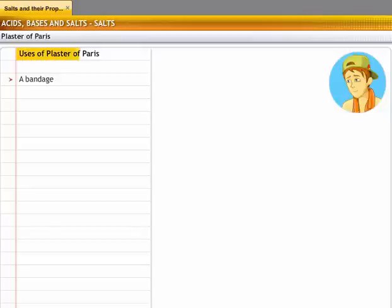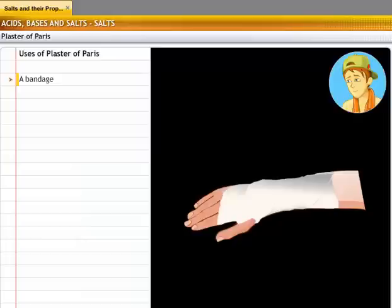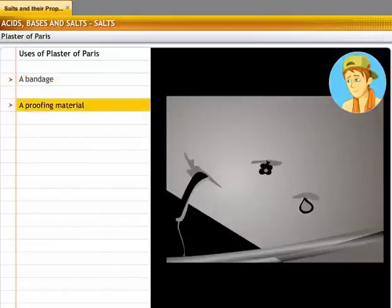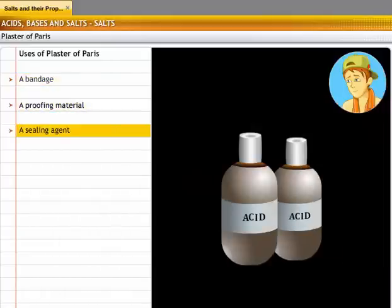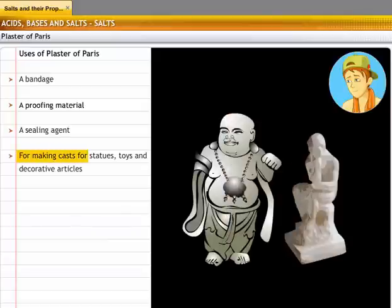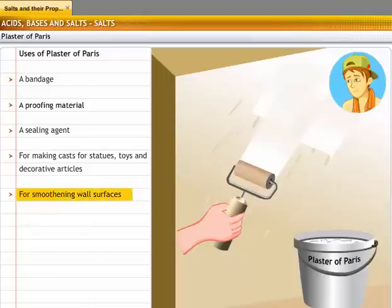Some of the uses of plaster of Paris are for setting fractures, since it hardens when mixed with water and sets in a short time, as a fire and waterproofing material, as a sealing agent in the laboratory for sealing air gaps in apparatus where airtight arrangement is required, for making casts for statues, toys and decorative articles, and for smoothening wall surfaces.